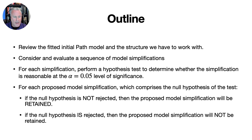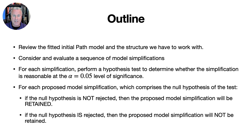Here is an outline of what we will be looking at in this video. First, we are going to review the fitted initial path model and the structure we have to work with. We will then consider and evaluate a sequence of model simplifications. For each simplification, we will perform a hypothesis test to determine whether the simplification is reasonable at the 0.05 level of significance. For each proposed model simplification, which comprises the null hypothesis of the test, if the null hypothesis is not rejected, the proposed model simplification will be retained; if the null hypothesis is rejected, the proposed model simplification will not be retained. So we've got a lot to do, so let's get to it.